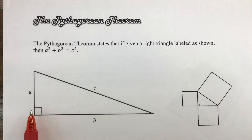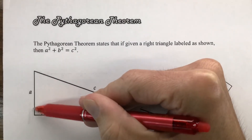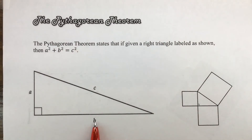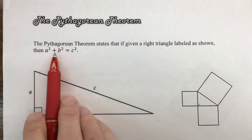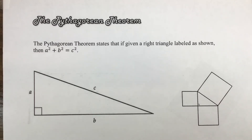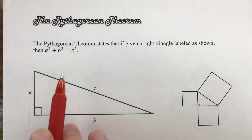Here's what it says: given a right triangle — meaning you have a right angle — if you take the leg lengths and square those values, then add them together, it will be equivalent to the hypotenuse squared. That's the Pythagorean theorem: the sum of the squares of the legs equals the square of the hypotenuse. What we're going to do is look at a proof of this, but it's not going to be a two-column proof — it's going to be a picture proof, which I think will be a little bit more exciting.